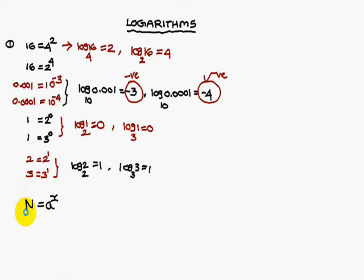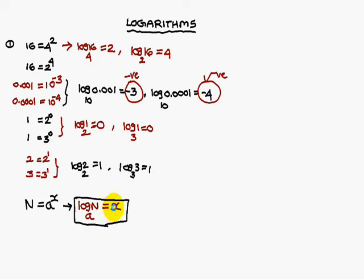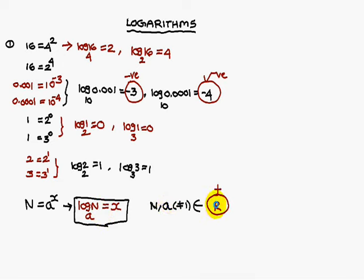In general, if n equals a to the power x, then log n base a is nothing but x. What you have to remember is that n and a should always be positive real numbers, and the base a should never be equal to 1. That is always to be remembered.